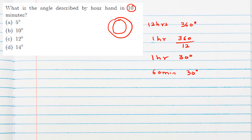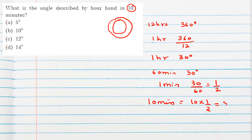In one minute, the hour hand covers 30/60 = 1/2 degree. So for 10 minutes, it covers 10 × (1/2) = 5 degrees. This answer of 5 degrees is present in the options, unlike the previous question where the correct answer was not in the options.